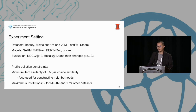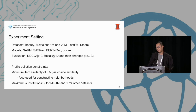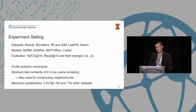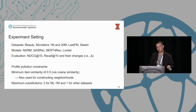For our experiment settings, we used datasets including Beauty, MovieLens 1M, MovieLens 20M, LastFM, and Steam. We adopted state-of-the-art sequential recommenders such as Norm SASRec, BERT4Rec, and Locker. We evaluate performance with NDCG@10 and Recall@10, along with their delta changes. For profile pollution attacks, we set minimum item similarity between original and adversarial items at 0.5, with a maximum of two substitutions for ML1M and one substitution for all other datasets.